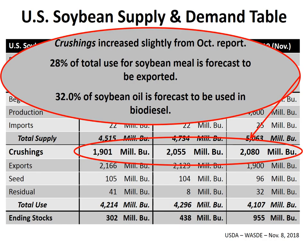Looking at the specific numbers, the crushings figure — the amount of soybeans going into the domestic crushing industry — increased slightly from the October report, about a 10 million bushel increase, representing a 1.2% increase from last year. The soybean meal primarily goes into domestic livestock feed, but approximately 28% of the meal is exported. Soybean oil is used primarily for food, but about 32% of soybean oil also goes into the biodiesel sector. So there are other market dynamics that can be important to the profitability of the crushing industry.